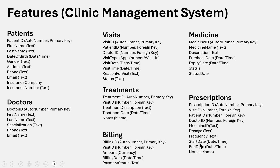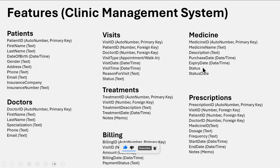In the prescription we'll store information about the medicine: dosage, frequency, medication start date, end date, and a note about the prescribed medicine. The medicine itself will have its own table in the database — medicine ID, medicine name, description, purchase date, expiry date, status, and status date. We'll also have a billing table with billing ID, visit ID, amount, billing date, and payment status. Very basic — nothing sophisticated.